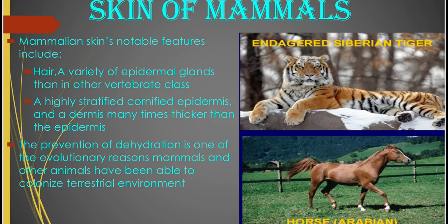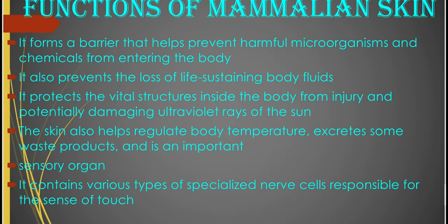You have some examples of mammals illustrated here — the horse and the tiger — you can see their skin covered by hair. Let's recall briefly the functions of mammalian skin. The mammalian skin serves as a barrier that helps prevent harmful microorganisms and chemicals from entering the body. It also prevents the loss of life-sustaining body fluids. The mammalian skin protects vital structures inside the body from injury and potentially damaging ultraviolet rays of the sun. The skin also helps in temperature regulation and is equally important in excretion of waste products. The skin serves as a sensory organ, with specialized nerve cells responsible for the sensation of touch, temperature, and pressure.